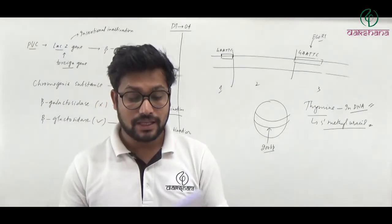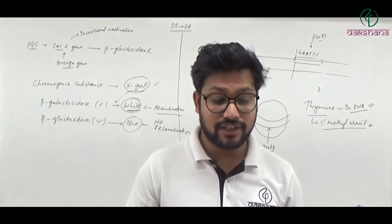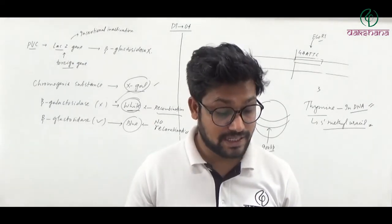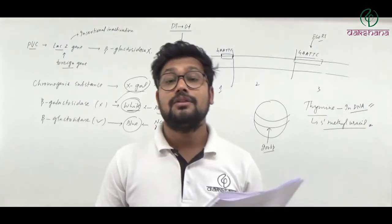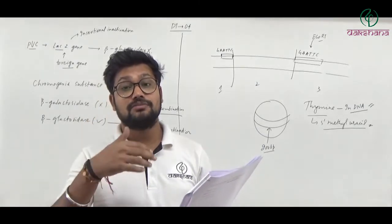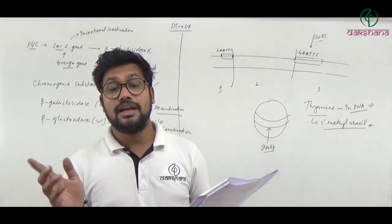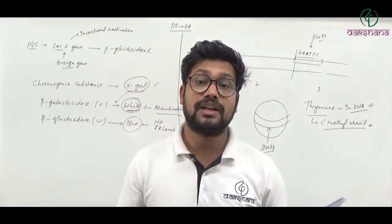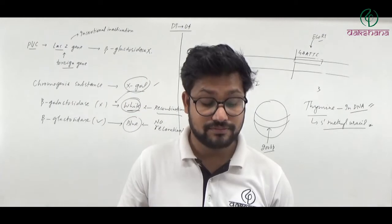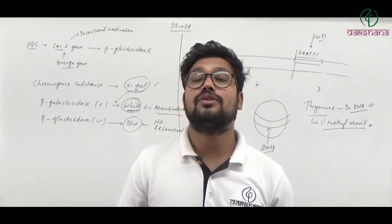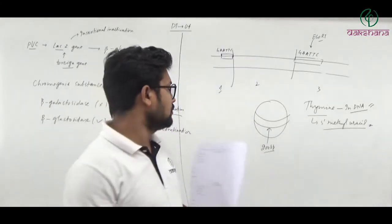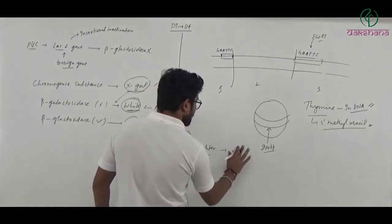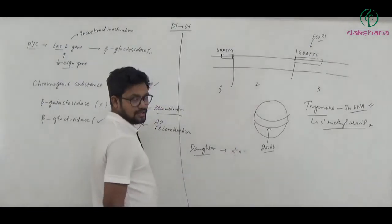Question number forty-four: In Mirabilis jalapa plant, when homozygous red flower and white flower plants are crossed, all F1 plants have pink-colored flowers. In F2 produced by selfing F1 plants, red, pink, and white flowers appear. This is incomplete dominance. Question number forty-four relates to the ratio produced in F2 generation.